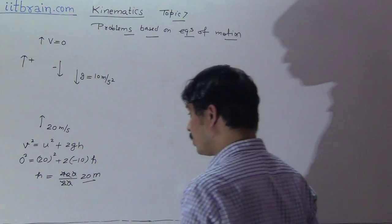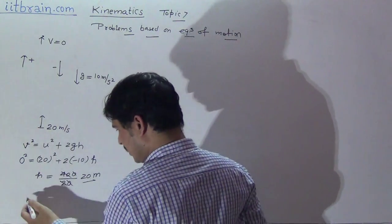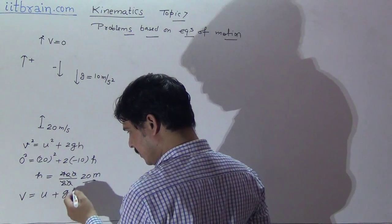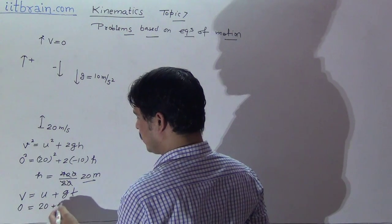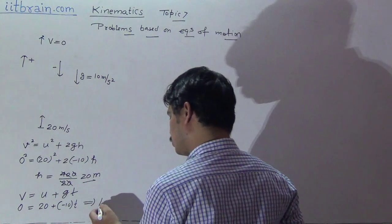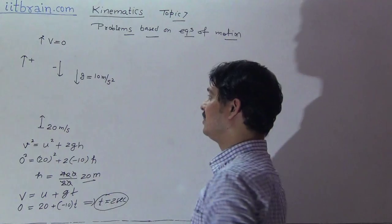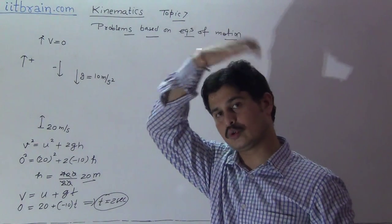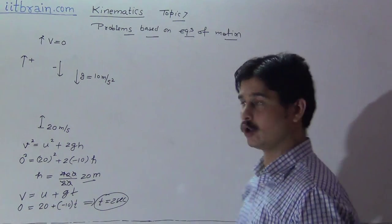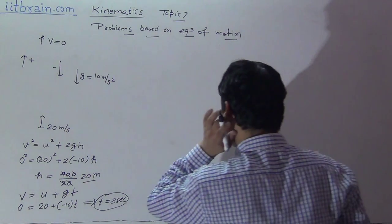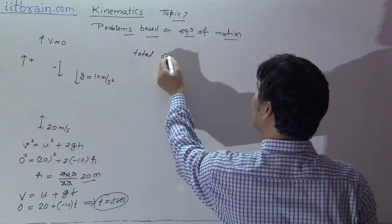To calculate the total time of journey from starting point to the top point, we use v equal to u plus gt. Here v is 0, u is 20, gravity is minus 10. Time works out to 2 seconds. So in 2 seconds the particle covers 20 meters and reaches the top point of its path.